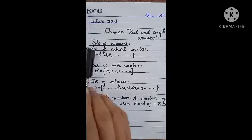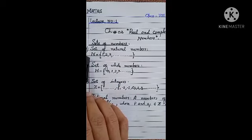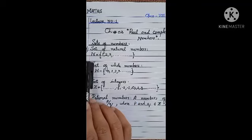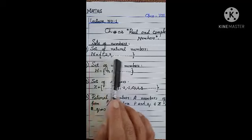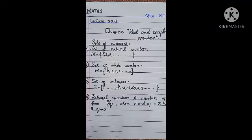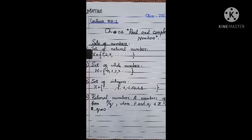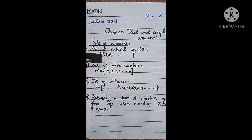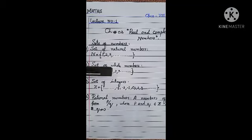The first topic is the set of numbers. The first set is the set of natural numbers, which is denoted by N. Natural numbers start from 1 and continue up to so on: 1, 2, 3... Remember that fractional numbers or decimal numbers are not included in the set of natural numbers.